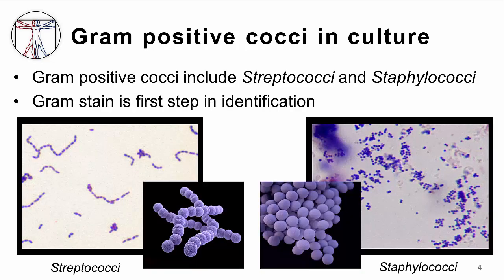Gram stain is the first step in identification of the gram positive cocci in culture, and gram positive cocci include both the streptococci and staphylococci species. The word coccus, or plural cocci, means seed or berry in Greek. On gram stain it's easy to see where both staph and strep got their names — both have a round spherical cell shape. However, the arrangement of cells is slightly different due to differences in binary fission during cell division. Streptococci form a chain of spherical cells because their division occurs in one linear direction, whereas staphylococci divide in various directions forming more grape-like clusters.